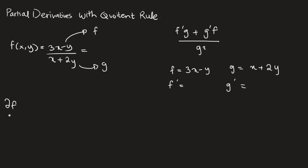This function has two variables, x and y. The notation for the partial derivative of f with respect to x — also written as f of x — means that y is treated as a constant. By the way, I made a video on partial derivatives linked in the description covering the basics; this video focuses on the quotient rule.